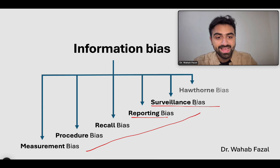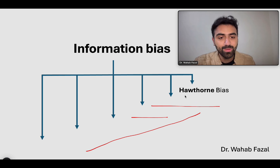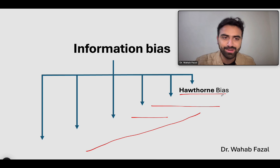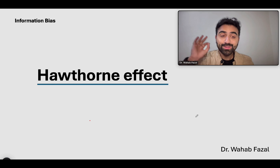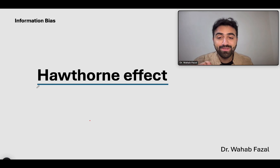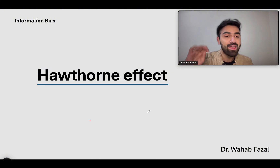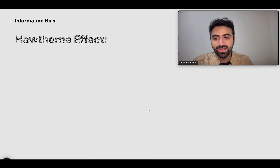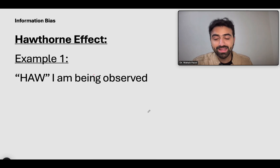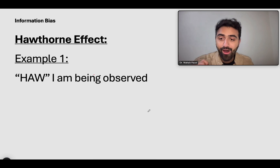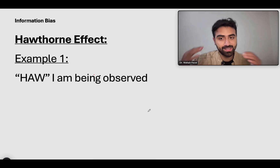The last type is slightly different — Hawthorne bias — and the name is not self-explanatory. But here's a mnemonic to make it easy: 'How I'm Being Observed.' Just remember that phrase and you'll understand Hawthorne effect very simply.